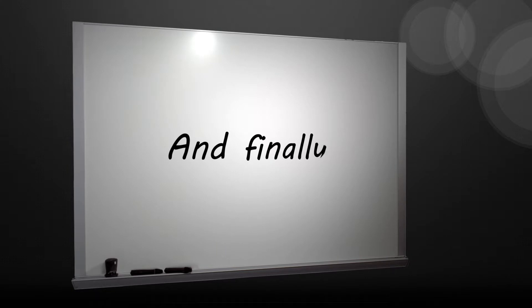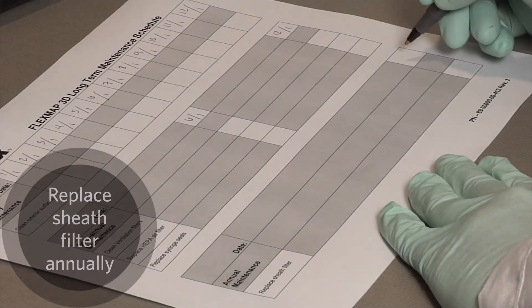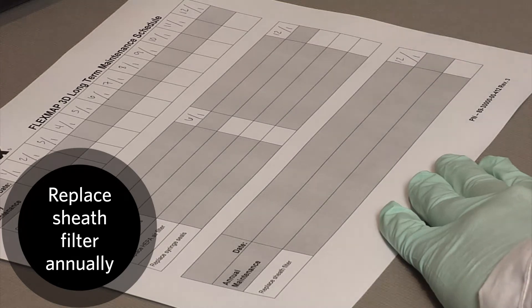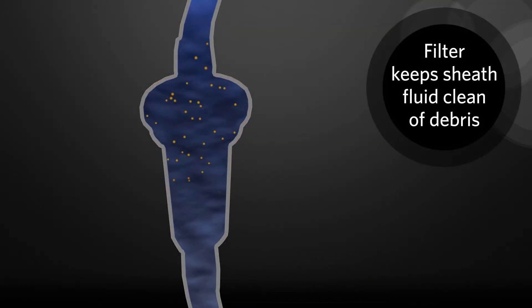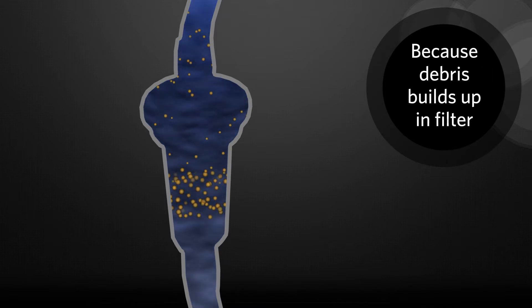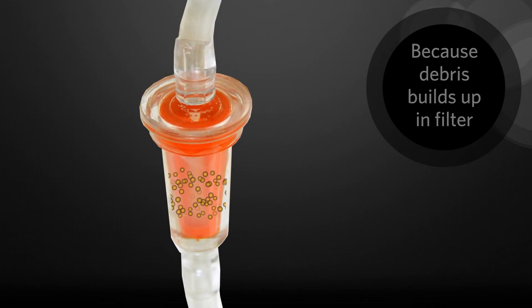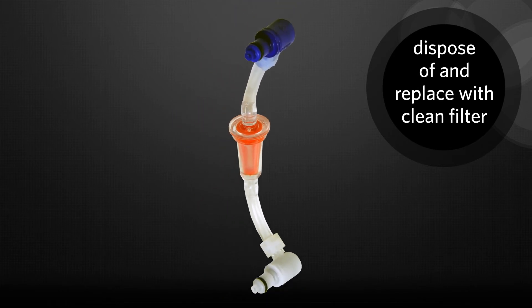And finally, remember: replacing the sheath filter on the FlexMap 3D instrument needs to be completed annually. This filter keeps the sheath fluid clean of debris. Because the buildup remains in the filter, it must be disposed of and replaced with a clean filter.